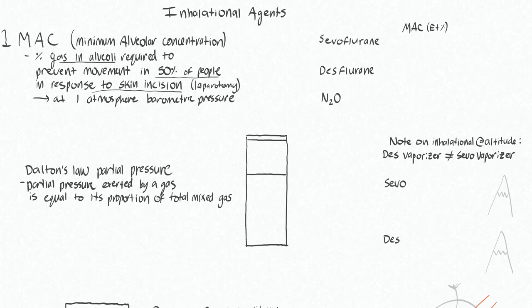There are a few specific statements in this definition to break down. We're talking about the percentage of gas in the alveoli required to prevent movement. We know that the gas works at the brain — that is the effect tissue — but we're able to measure the gas in the alveoli to tell us what's happening in the brain. We'll talk about why that is.